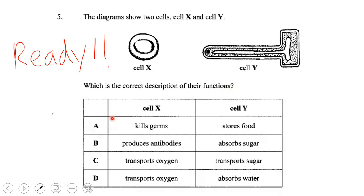Is it A, kills germs and stores food? Is it B, produces antibodies and absorbs sugar? Is it C, transports oxygen and transports sugar? Or is it D, transports oxygen and absorbs water?